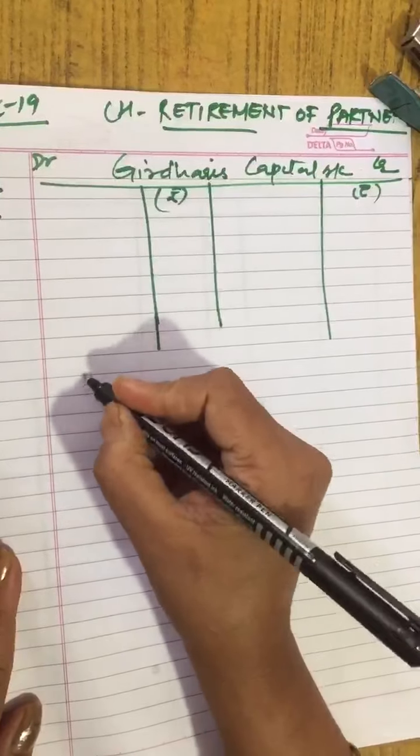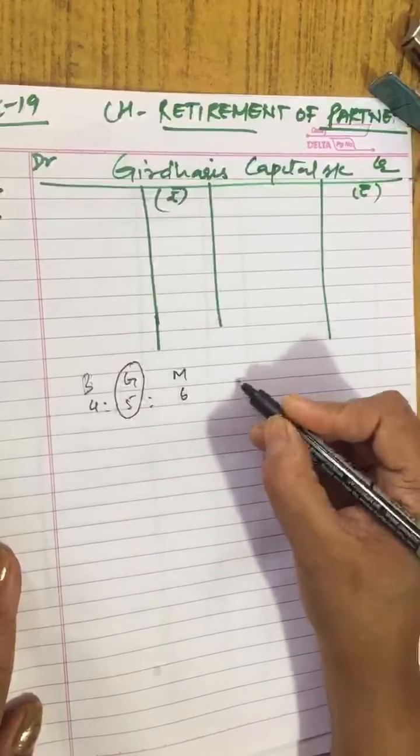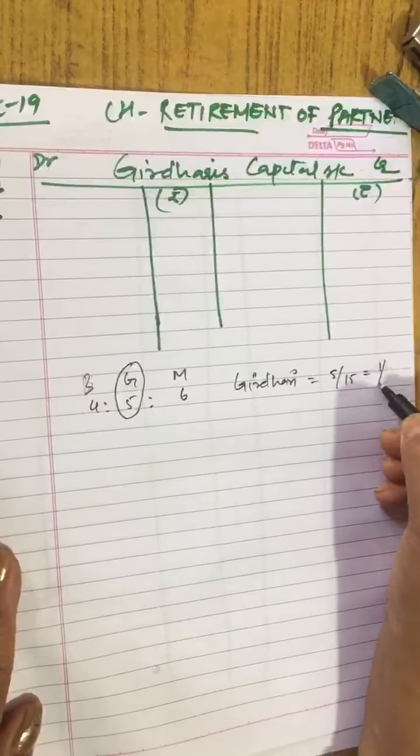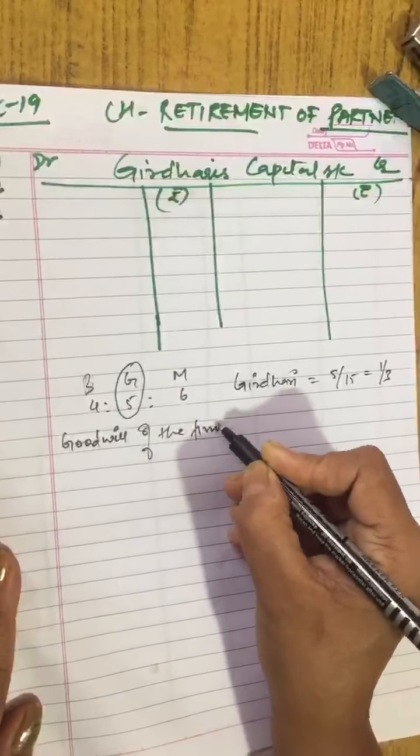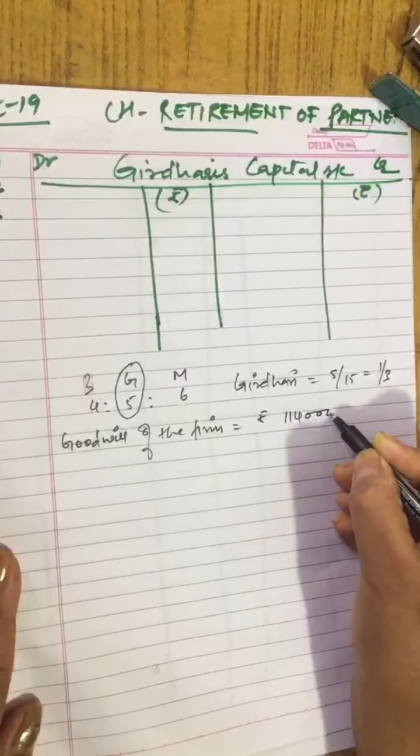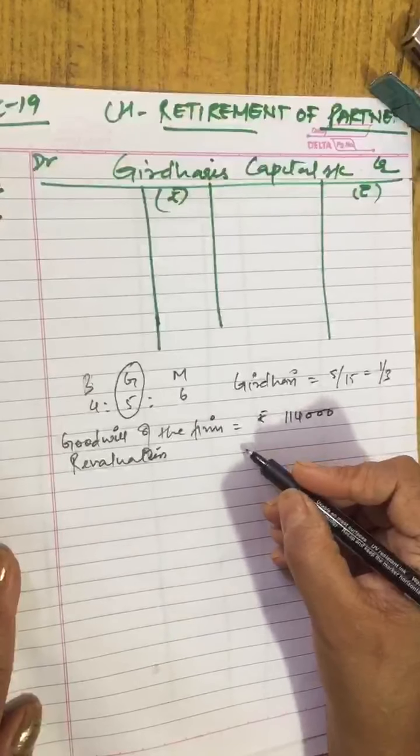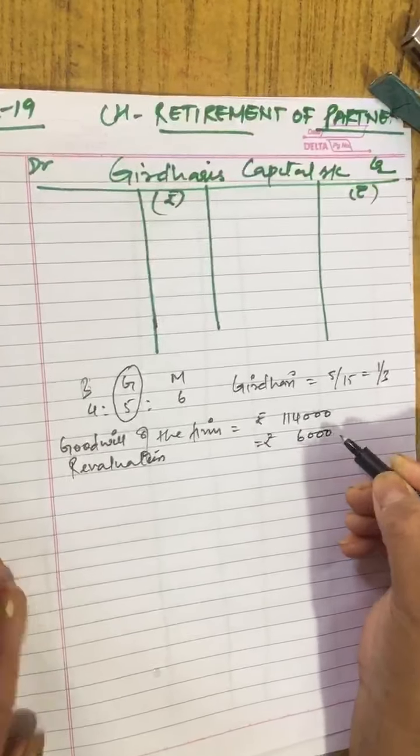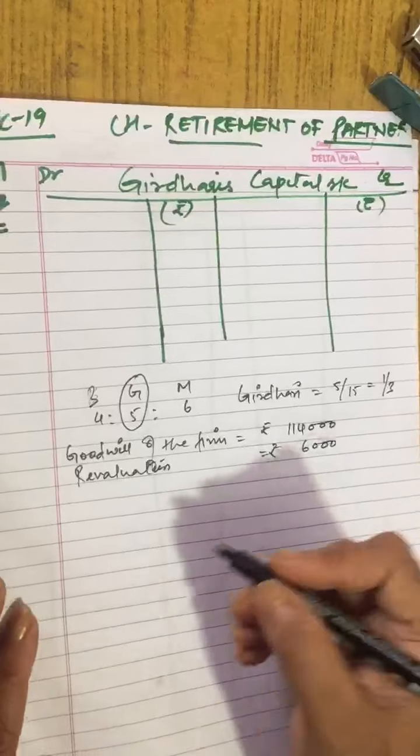Question is saying that at the time of retirement there are three partners: Banwari, Girdhari and Murari, and their profit sharing ratio is 4:5:6. Girdhari is retiring and Girdhari's share is 5 by 15 means 1 by 3. And when Girdhari is retiring on that day, goodwill of the firm given in question is rupees how much? 1 lakh 14,000. Girdhari has retired and if you see, revaluation profit is also given. Revaluation of assets and reassessment of liabilities resulted in a profit of rupees 6,000.